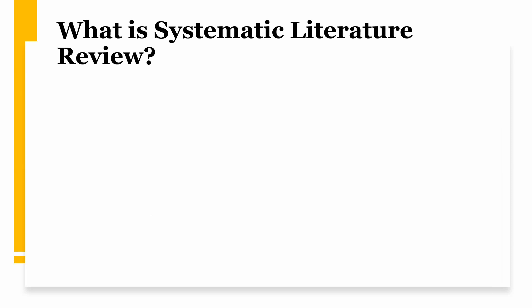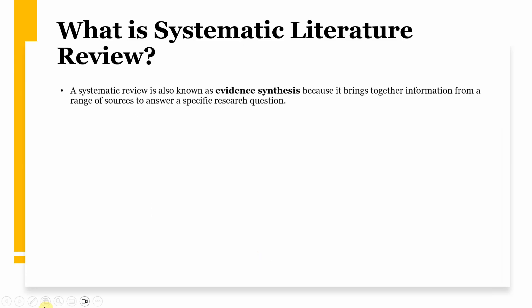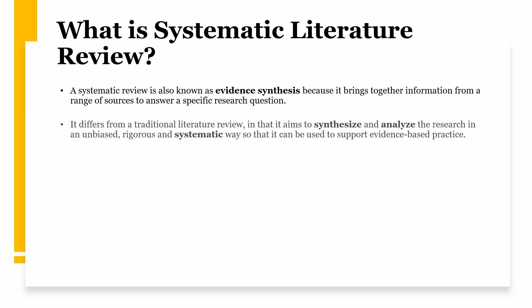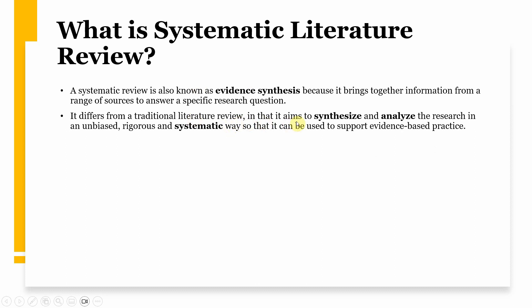A systematic literature review, also known as evidence synthesis, brings together information from a range of sources to answer a specific research question — for example, how and why corporate social responsibility influences financial performance. It differs from a traditional literature review in that it aims to synthesize and analyze research in an unbiased, rigorous, and systematic way, so that it can be used to support evidence-based practice.